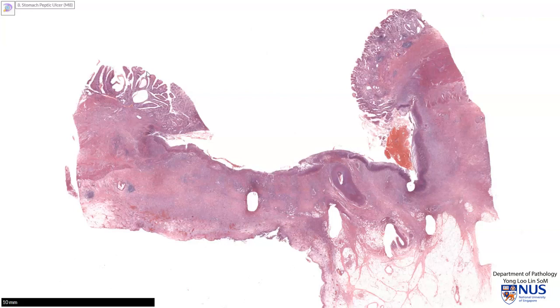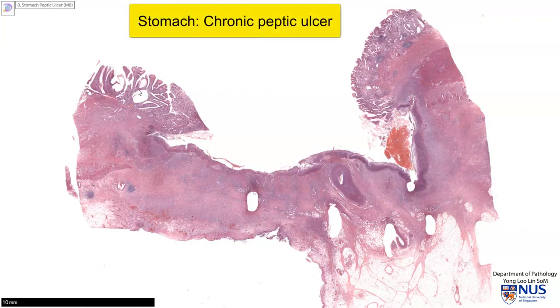This is a virtual microscopy slide of a chronic peptic ulcer. Here on the left and on the right, we are looking at the intact gastric mucosa.